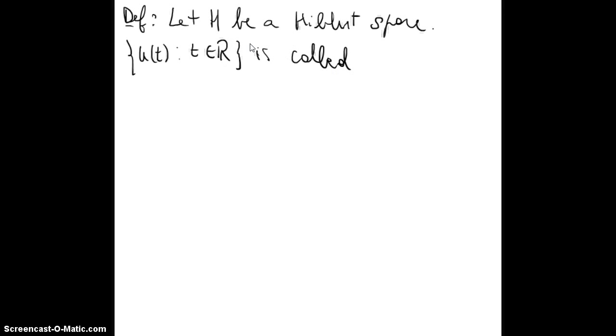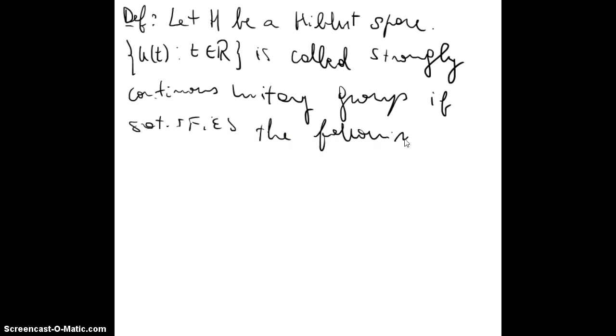Okay, so now let's see what happens in Hilbert space. So let H be a Hilbert space, and we will call the set U(t), t in R, like always, is called, well now we are not taking positive all but taking all the line, it's called strongly continuous unitary group.